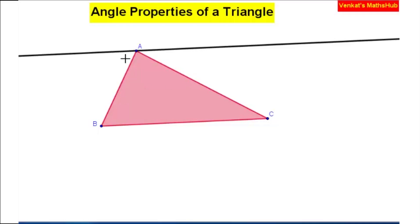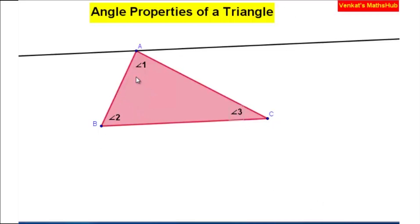Now I have got alternate angles. I am going to assign labels: this is angle one of the triangle, this is angle two of the triangle, and this is angle three of the triangle. Because of the parallel lines, alternate angles are equal — so this is also angle two.